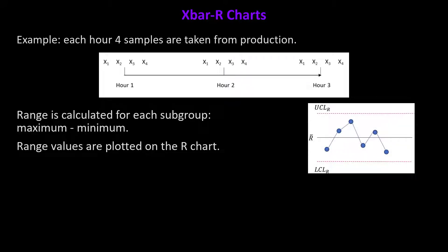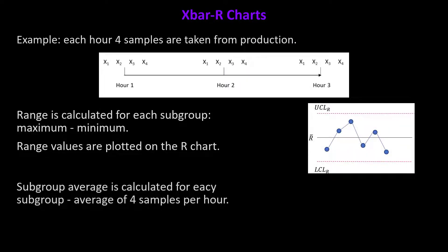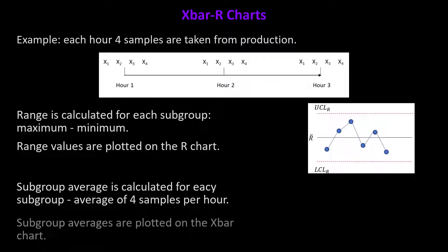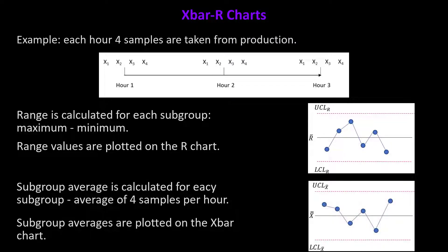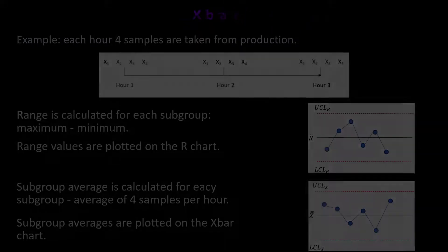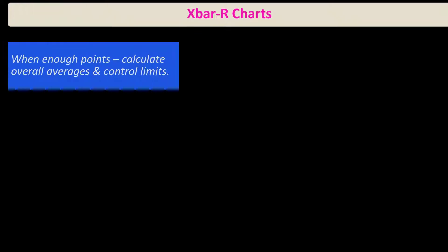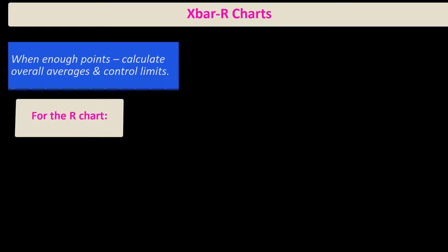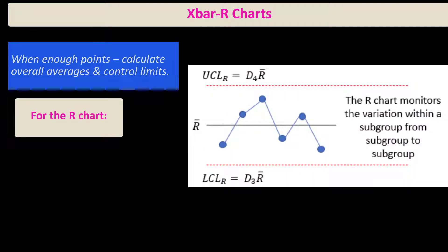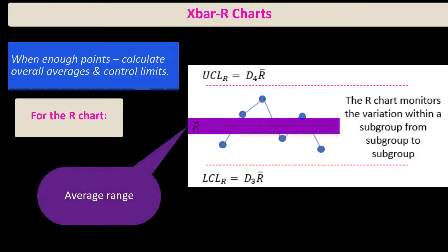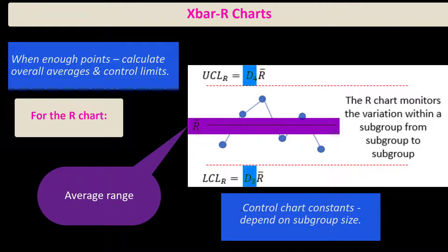Then you do the same thing with the subgroup averages: calculate the subgroup average for the four samples each hour and plot those on the X-bar chart. So the X-bar and R-chart consists of two charts — one for the range values and one for the X-bar values. When you have enough points, you calculate the overall averages and control limits.